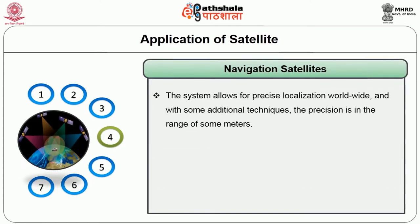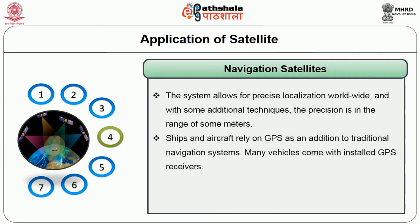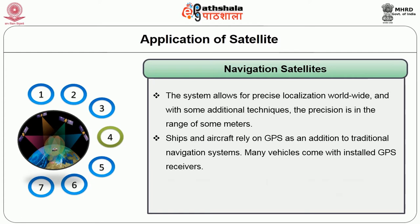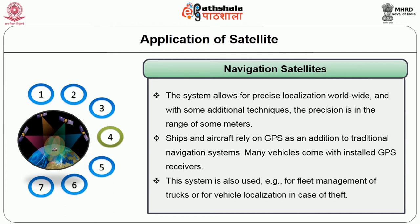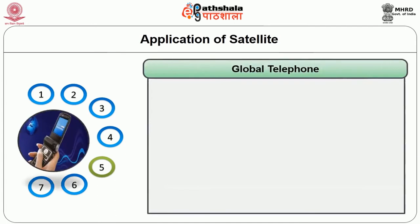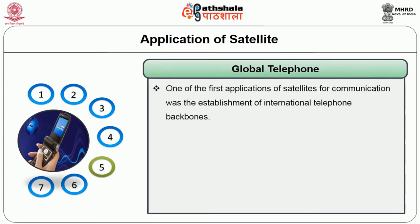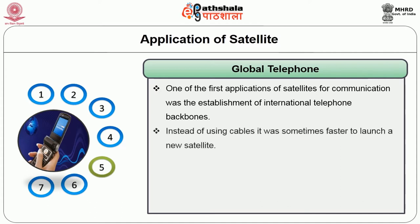Navigation satellites: The system allows for precise localization worldwide and with some additional techniques, the precision is in the range of some meters. Ships and aircraft rely on GPS as an addition to traditional navigation systems. Many vehicles come with installed GPS receivers. This system is also used for fleet management of trucks or for vehicle localization in case of theft. The next application is global telephone — one of the first applications of satellites for communication was the establishment of international telephone backbones. Instead of using cable, it was sometimes faster to launch new satellites.